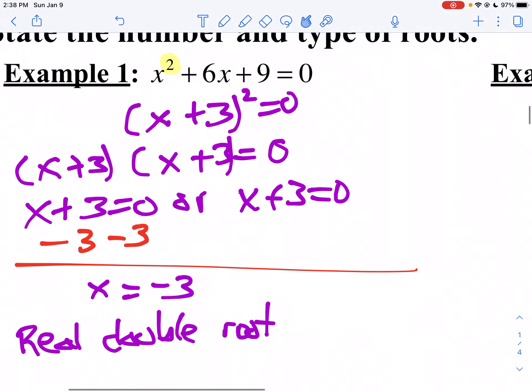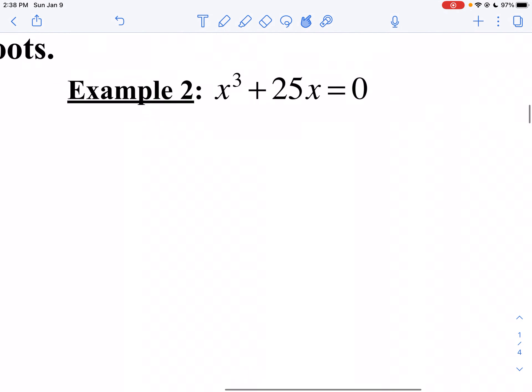Let's apply that to the next example. If I look at example two now, notice my biggest exponent is 3, so I'm going to have up to three solutions. Let's factor this. I notice there's an x in both of these, so I'm going to go x times (x² + 25) = 0.